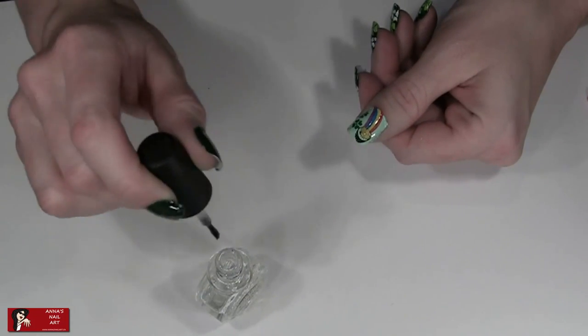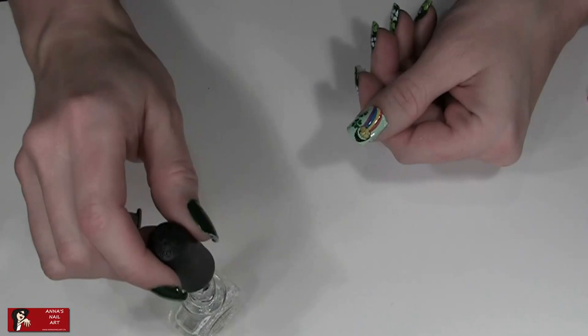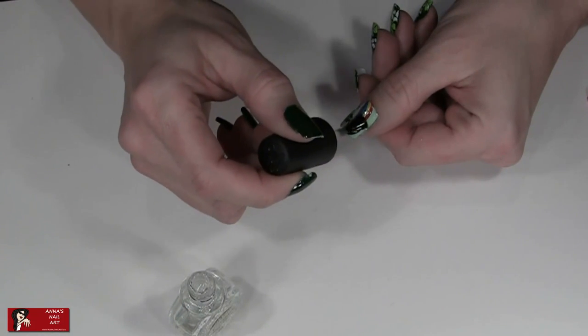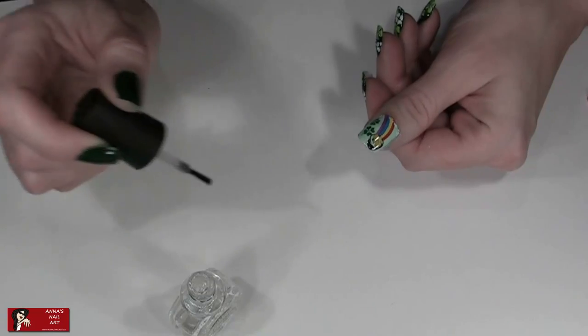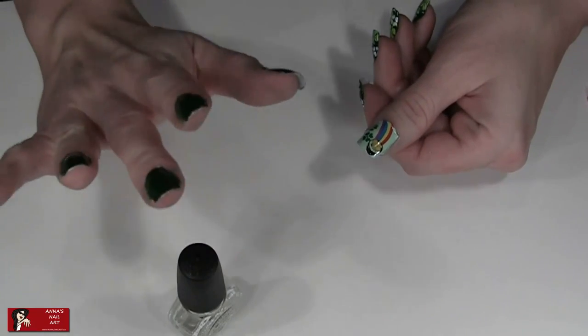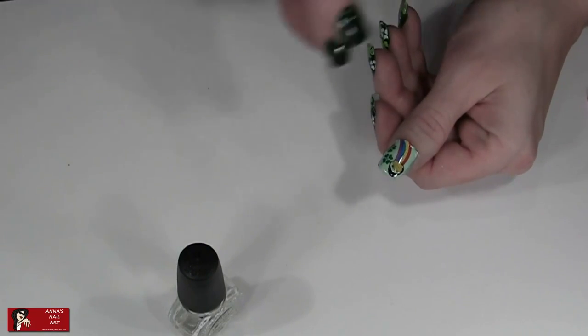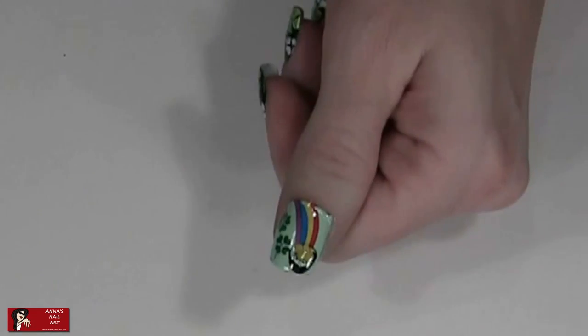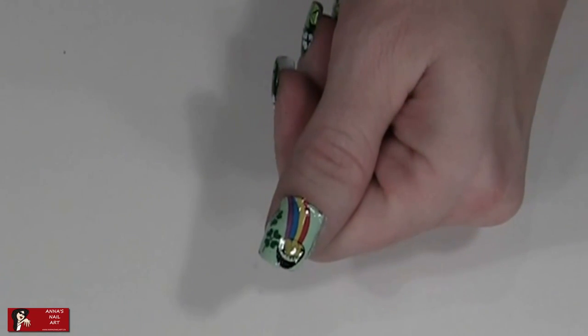And you're only going to try to go over the design once. So what I like to do is I like to go once down the middle, I'll re-dip in, then once on the side, and then once on that side, and then leave it. Because if you keep going back over it, it'll tend to bleed. And that's all there is to it to doing this pot of gold design.